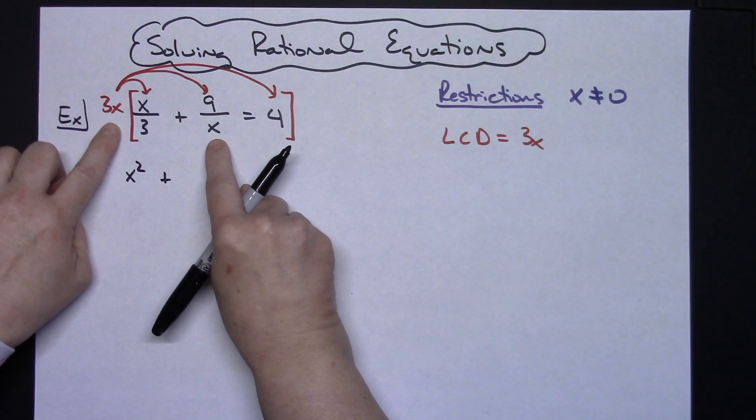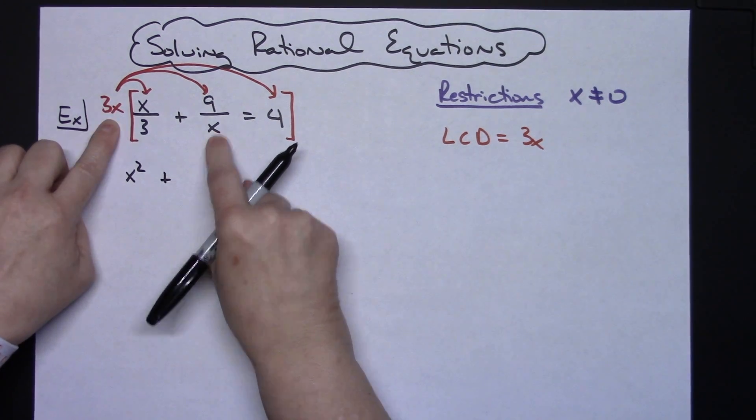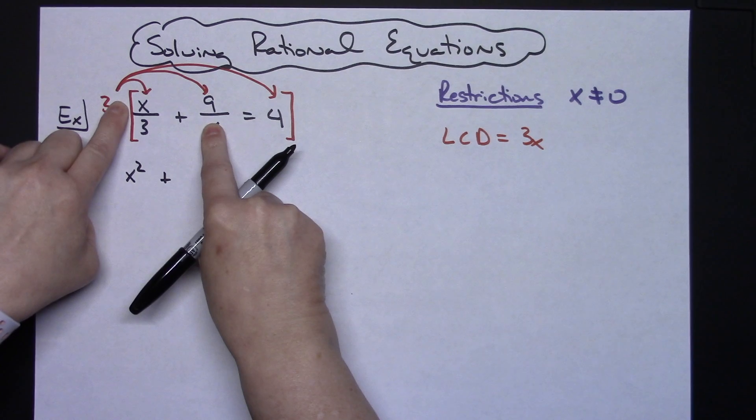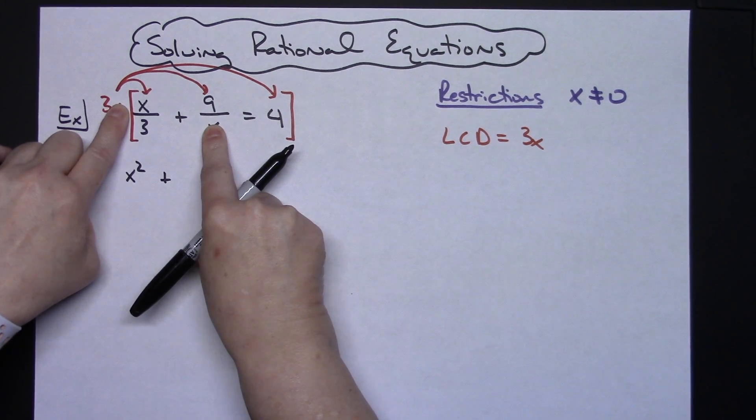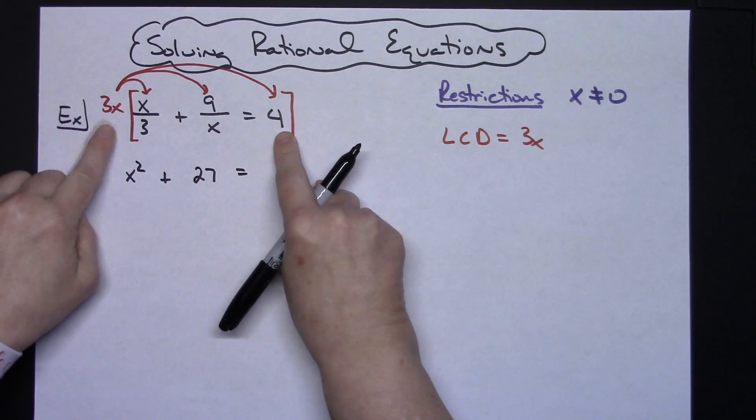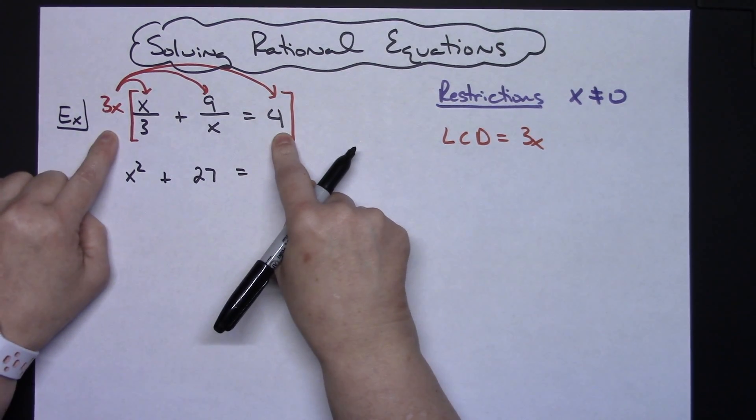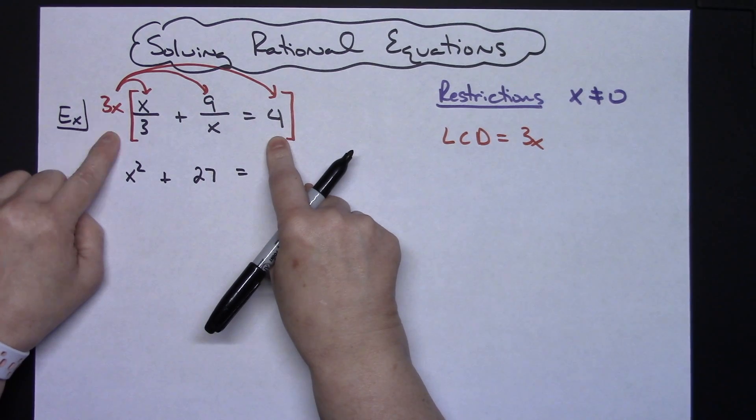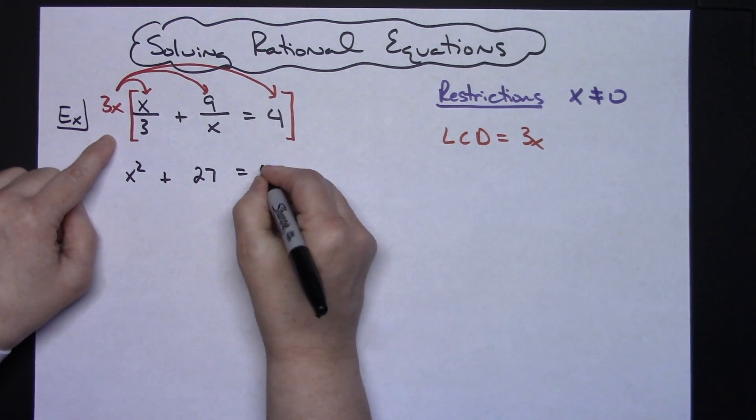And then plus. Then I'm going to distribute here. When I take 3x times 9 over x, the x's are going to cross out. I'm going to be left with 3 times 9 which is 27. When I distribute here, this is not a fraction. Neither is this, so I'm just going to straight multiply this. 3 times 4 is going to be 12 and I'll have the x with it.